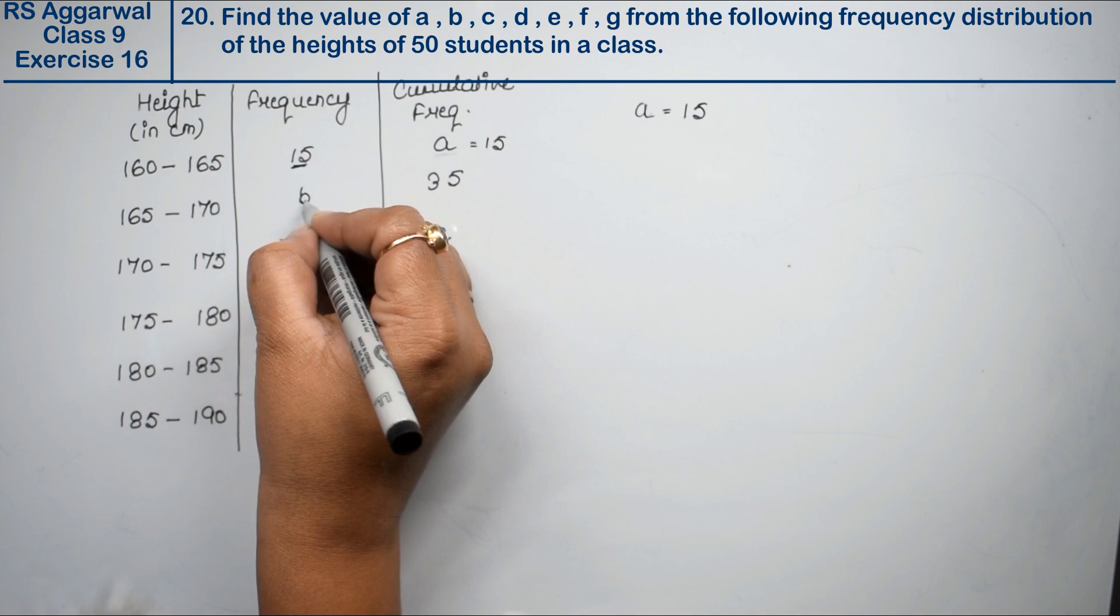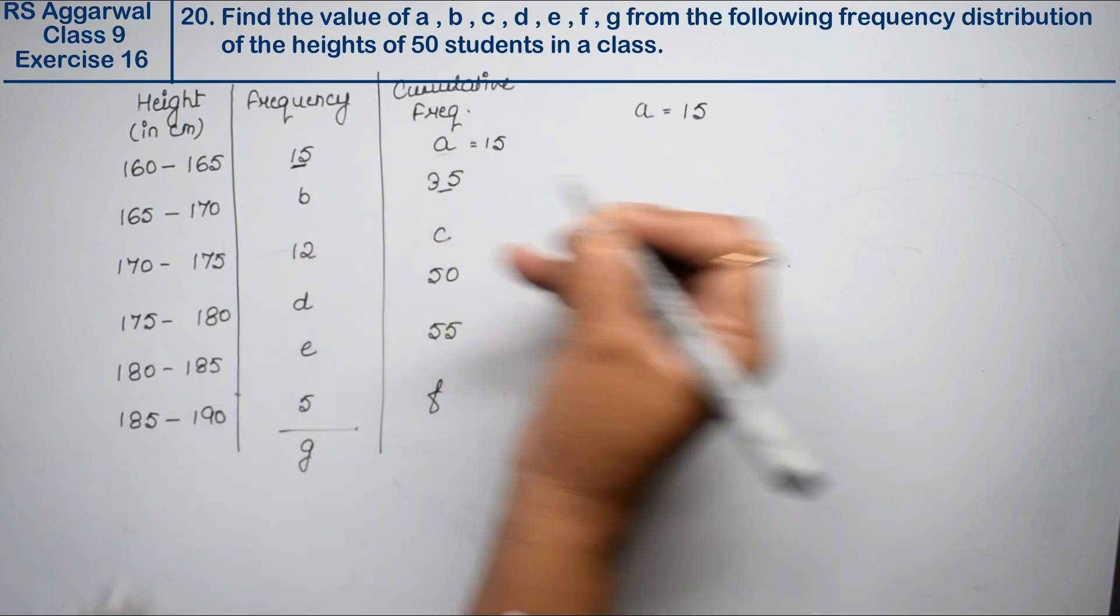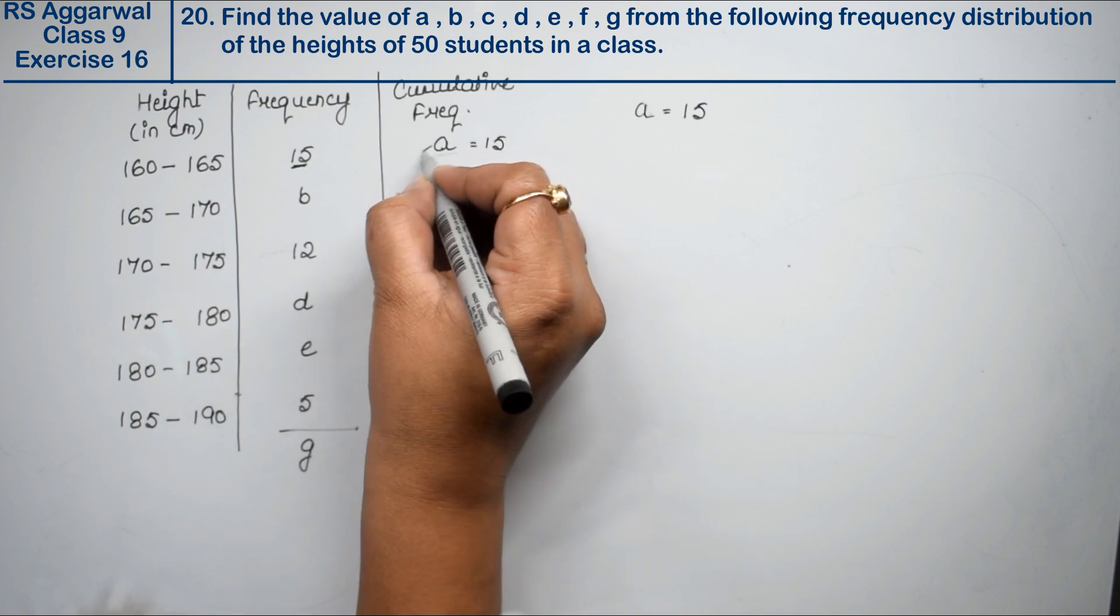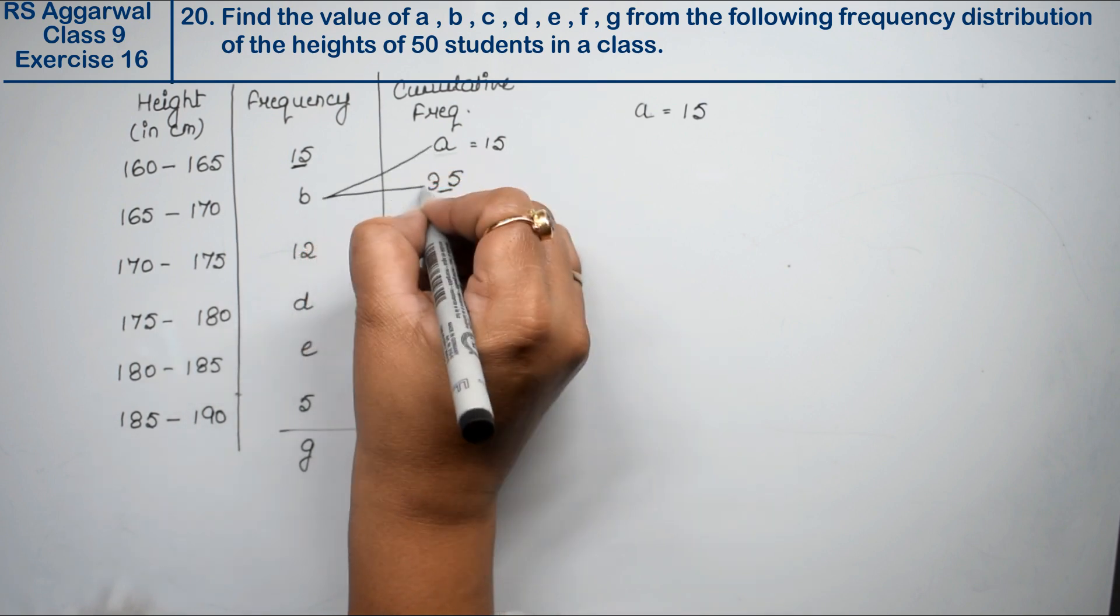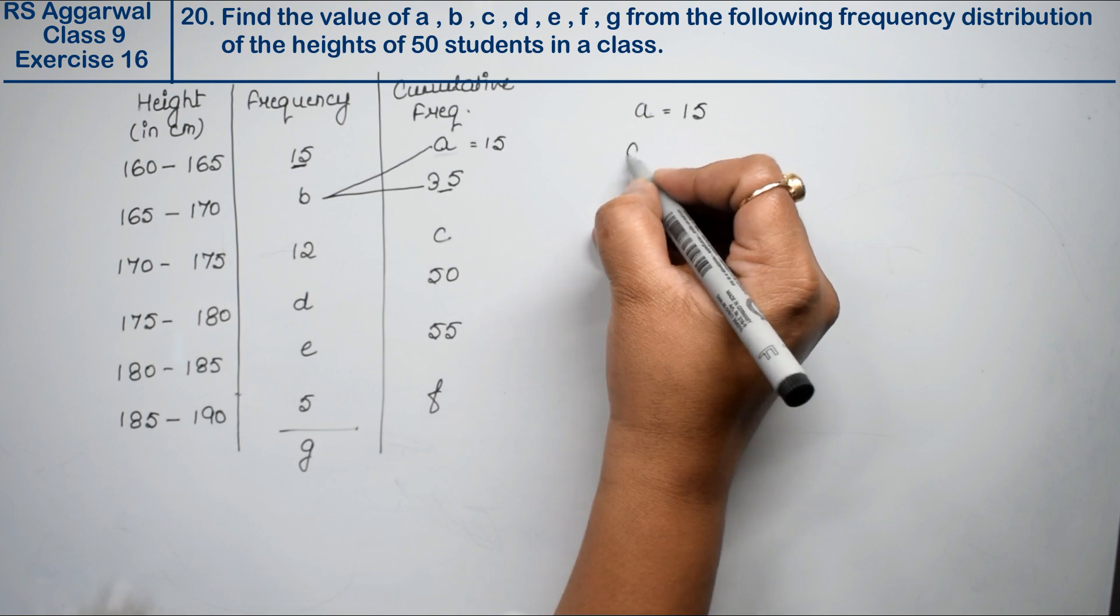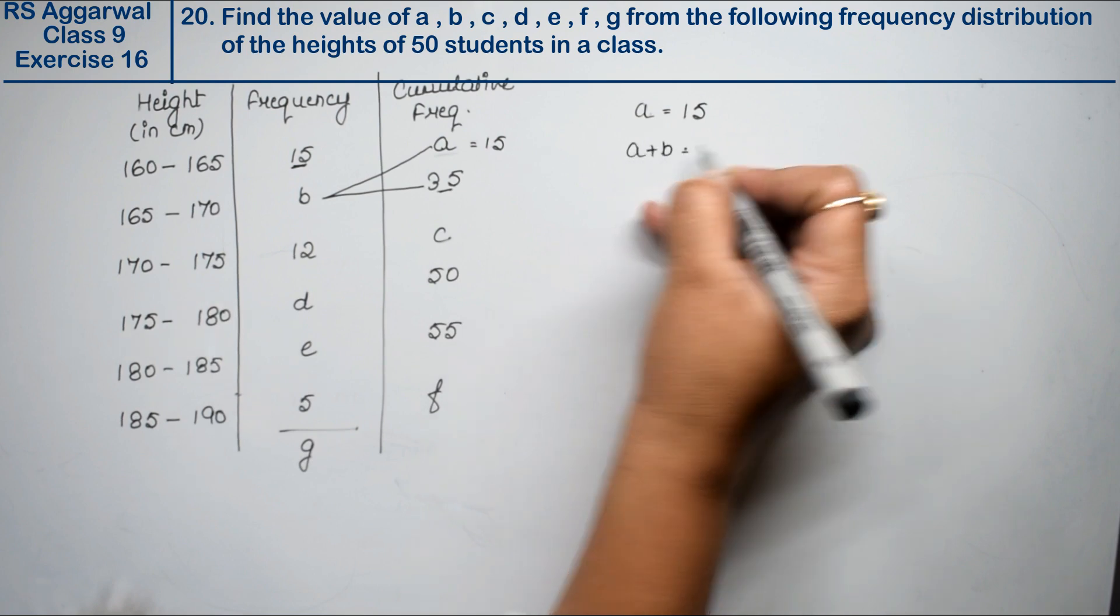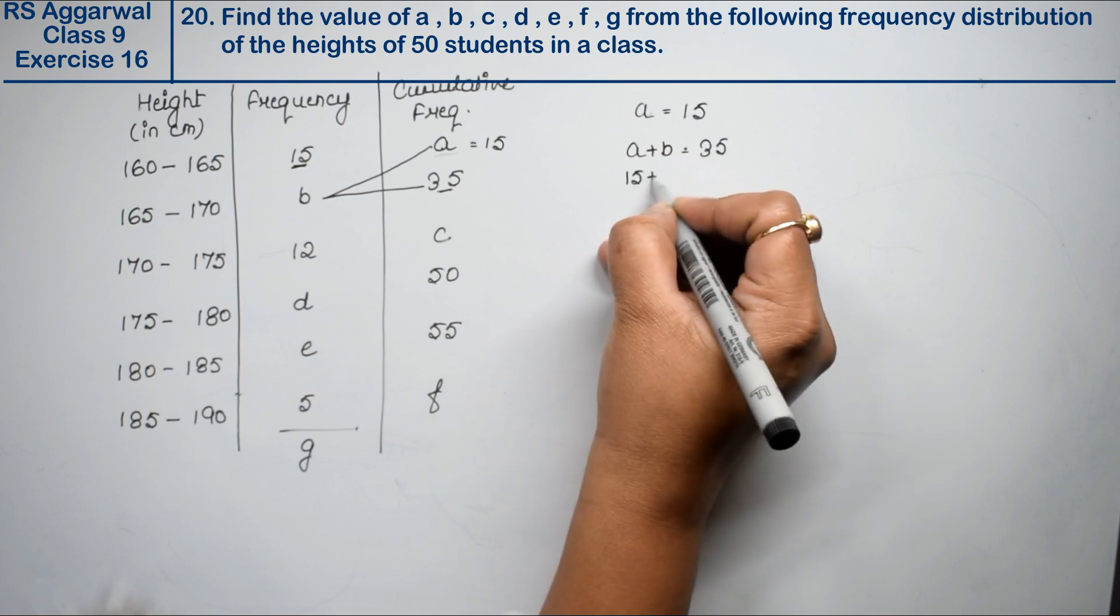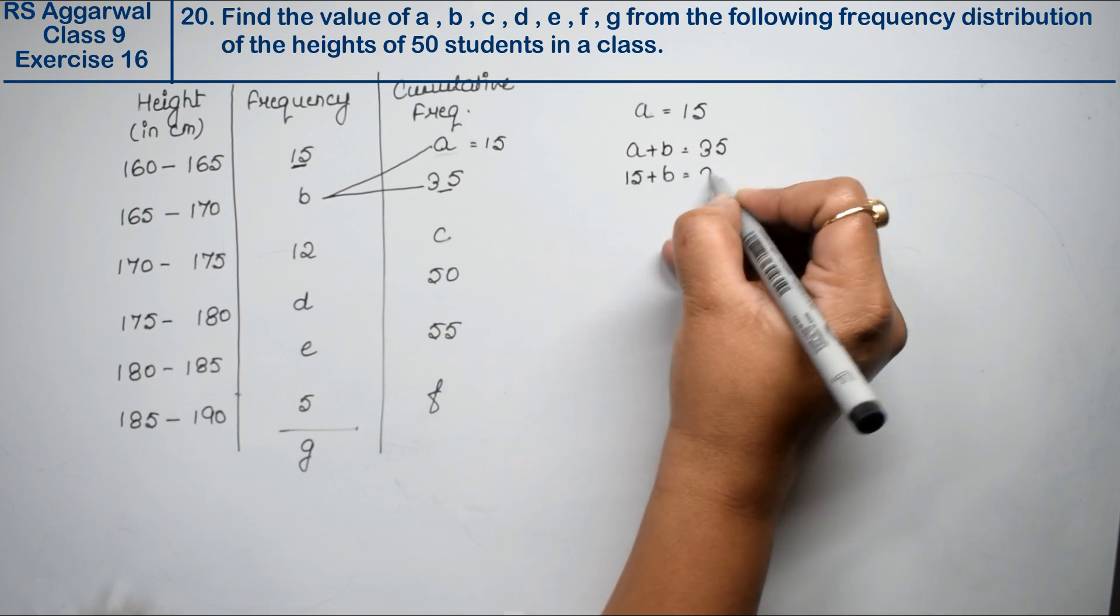Now, what will B come here? How will this value come here? This plus this equals to this. I have made it like this. That means this plus this. So, A plus B equals to 35.